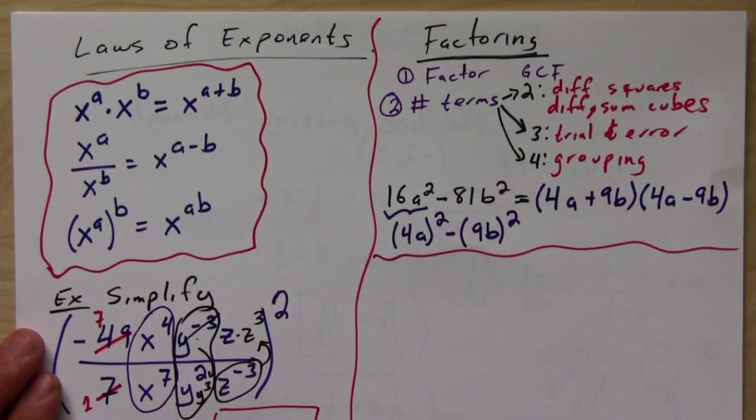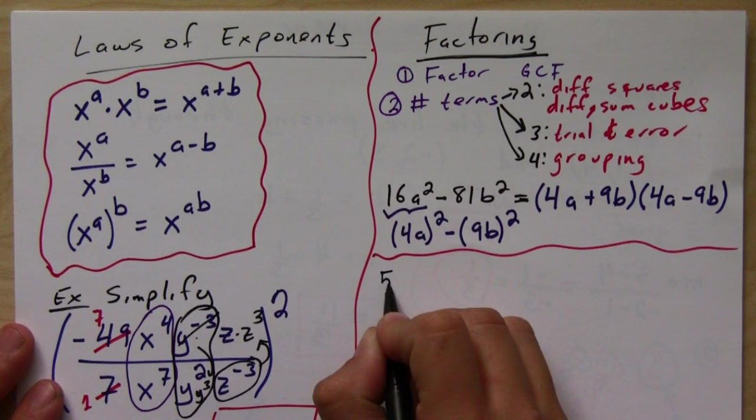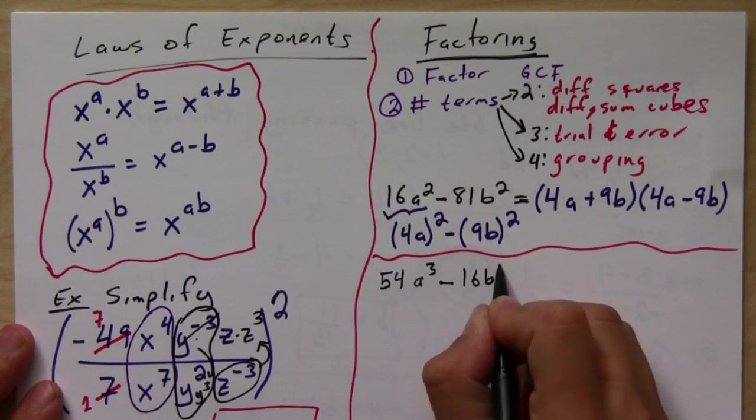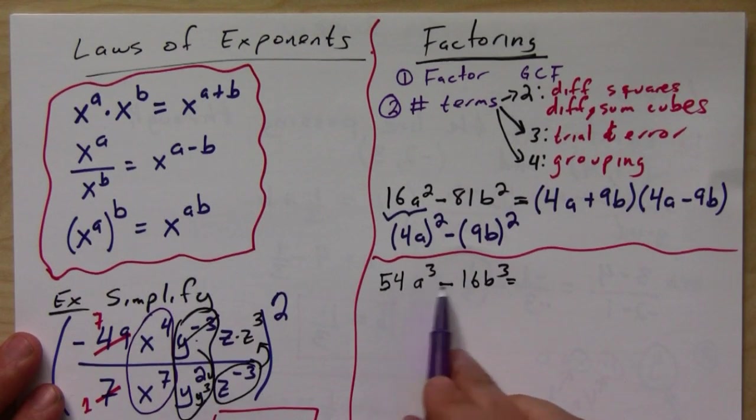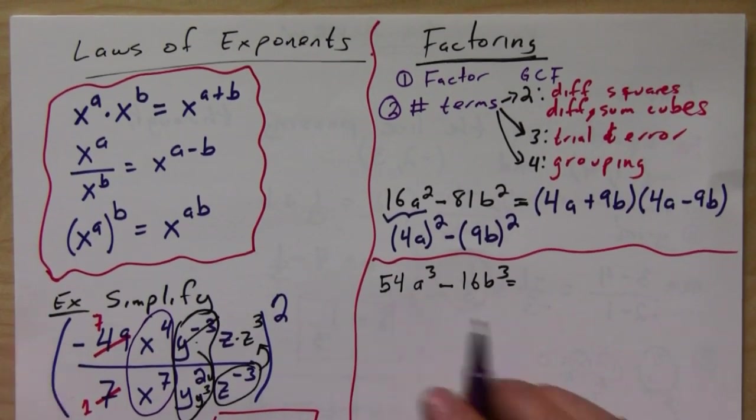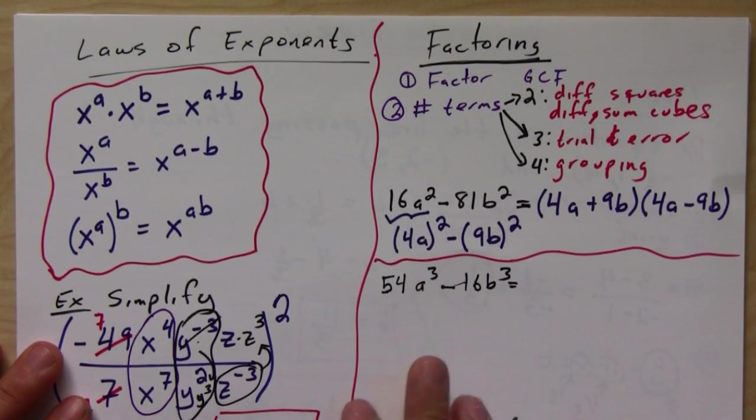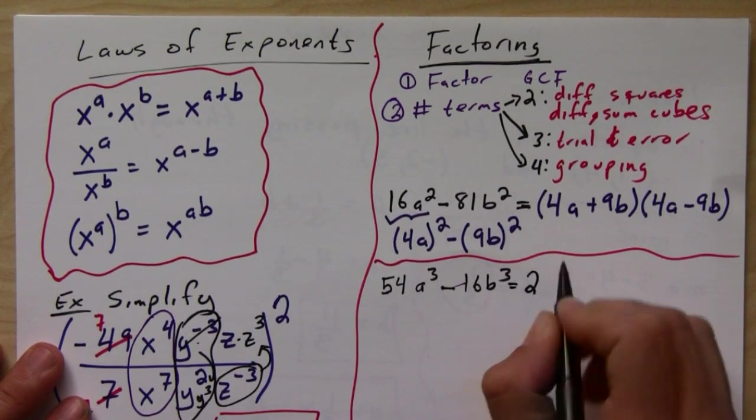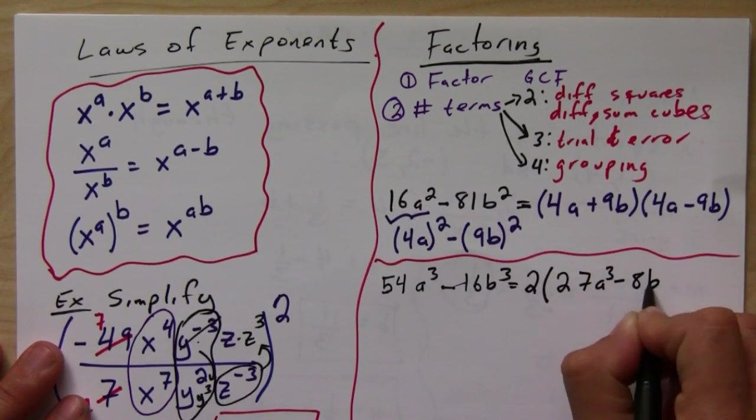Okay, so let's take a look. Let's say we want to do something like 54a cubed minus 16b cubed. So we notice that these guys are cubes. So that's a hint to us that it's probably a difference of cubes. Now, the problem is that 54, there's no number cubed that gives us 54. But we do notice that we can take out a greatest common factor here. Notice that 54 and 16 are both divisible by 2. And that would mean that we would be left with 27a cubed minus 8b cubed inside.